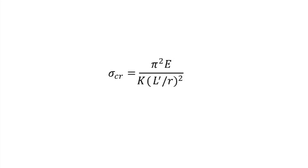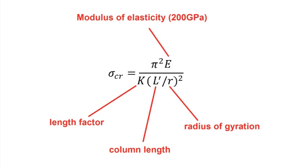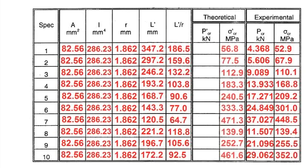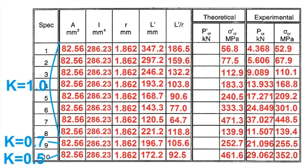Calculate the theoretical failure stress of each column by using this formula. Don't forget to multiply this value by k, depending on the support conditions. k is equal to 1 for pinned-pinned, 0.7 for pinned-fixed, and 0.5 for fixed-fixed columns.